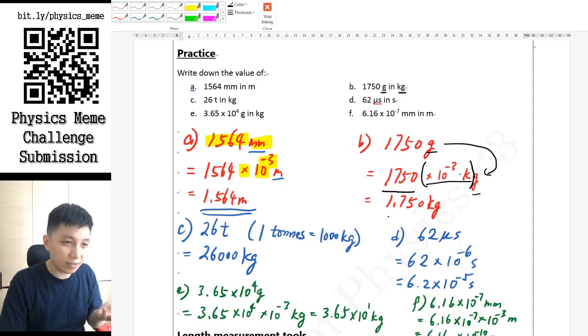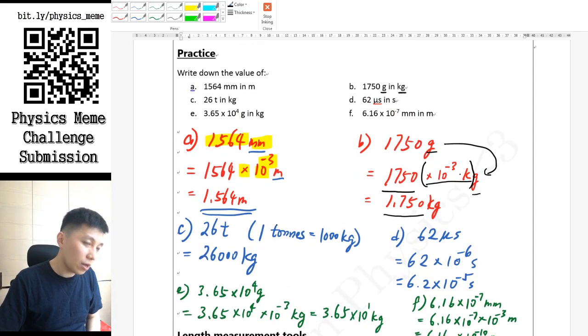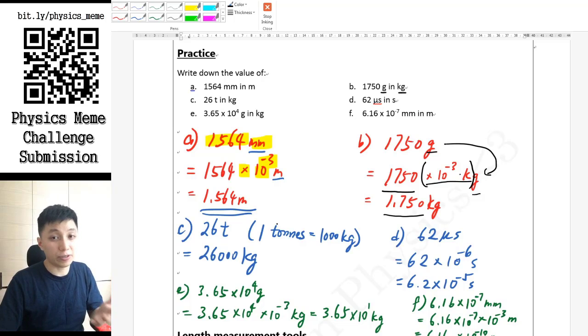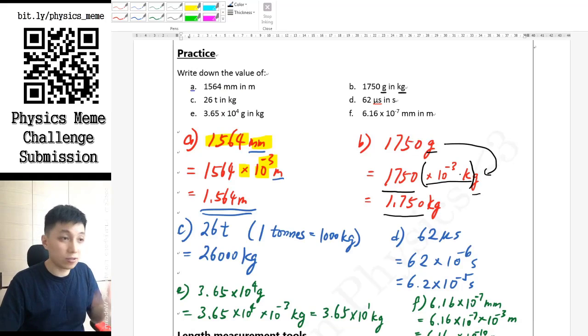For part c, you really have to understand what T means. I'm sorry if you are confused about that, but in fact T actually means tons. So if you try to Google it, you will find out 1 ton means 1000 kilograms, and that's all you need to do here.